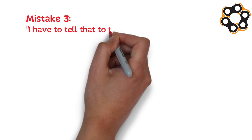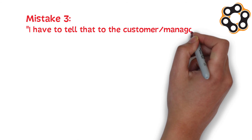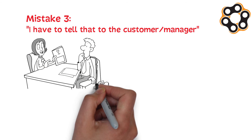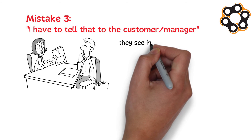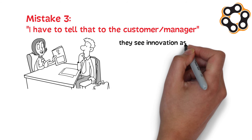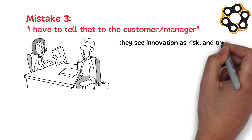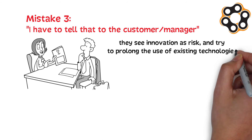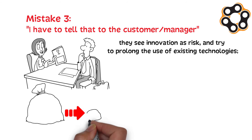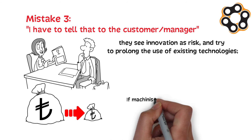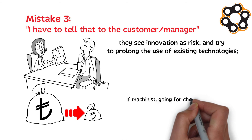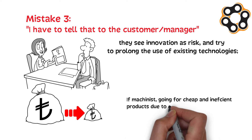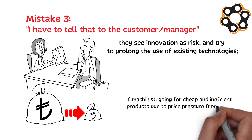This is something to communicate to the customer manager. If decision makers are end users, they see innovation as risk and try to prolong the use of existing technologies. If it's the machinist, they go for cheap and inefficient products due to price pressure from consumers.